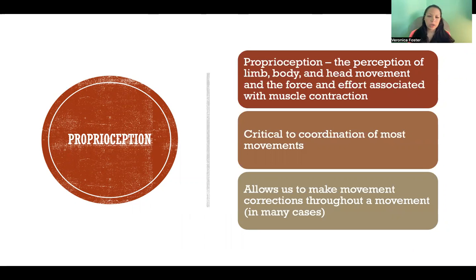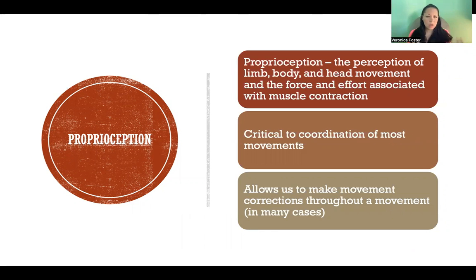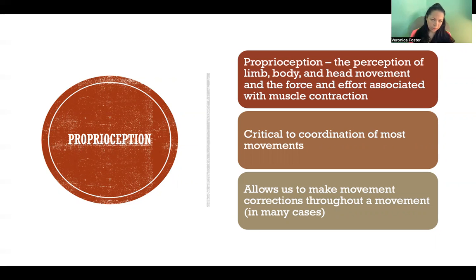Proprioception is our sense of where we are in space, both in relation to our environment, but also the relationship between movement of one limb and different limbs, and the movement of your body and your head. Proprioception also gives us information about the force being generated by muscles and transmitted through tendons, and forces being applied externally to the body.